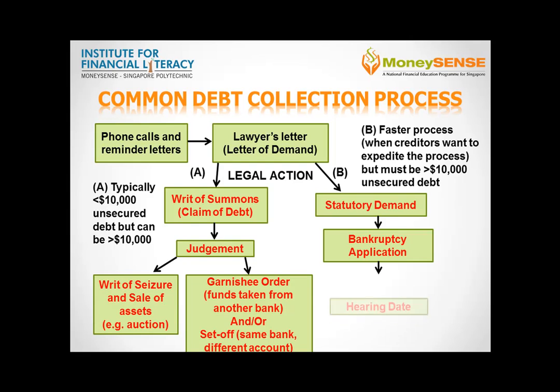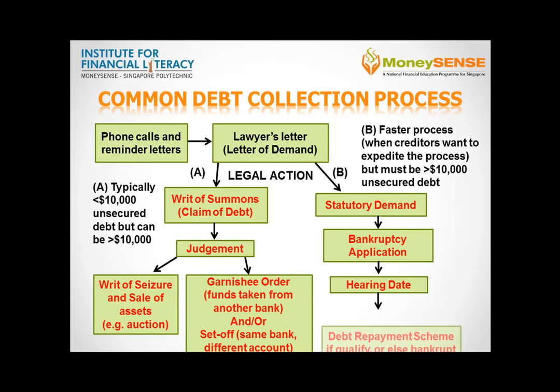A hearing date will be set for the bankruptcy application to be heard in court. For all bankruptcy applications filed after 18 May 2009, the High Court may refer the debtor to the official assignee for an assessment of the debtor's eligibility and suitability to enter into a debt repayment scheme to avoid bankruptcy, failing which the debtor will be declared a bankrupt.